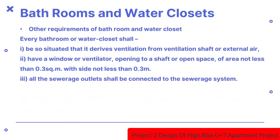Every bathroom or water closet shall be so situated that it derives ventilation from a ventilation shaft or external air. It shall have a window or ventilator opening to a shaft or open space of area not less than 0.3 square meters with a side not less than 0.3m. All sewerage outlets shall be connected to the sewerage system.